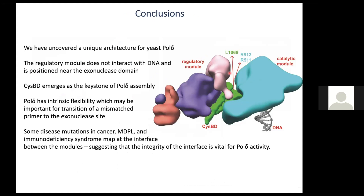The presence of mutations at the interface suggests that both the stability and flexibility of the interface are important for the function of the holoenzyme. With our structure in hand, these mutations can now be tested genetically and biochemically for their impact on enzyme function.